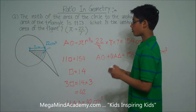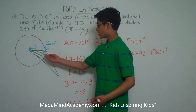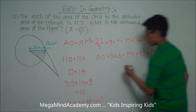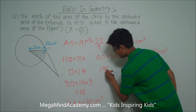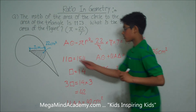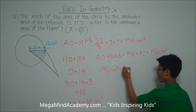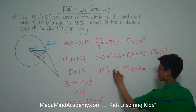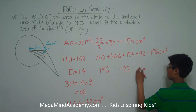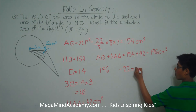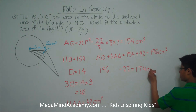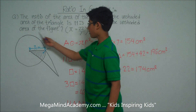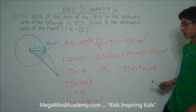Now, to solve the rest of the problem, we subtract the area of the shaded portion, which is 22 centimeters squared, from 196 centimeters squared. So 196 centimeters squared minus 22 centimeters squared equals 174 centimeters squared. This means that the unshaded area of the figure is 174 centimeters squared.